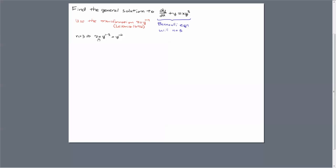So when n equals 3, that means that v is equal to y to the 1 minus 3, or y to the minus 2 power. So let's see how the transformation works.